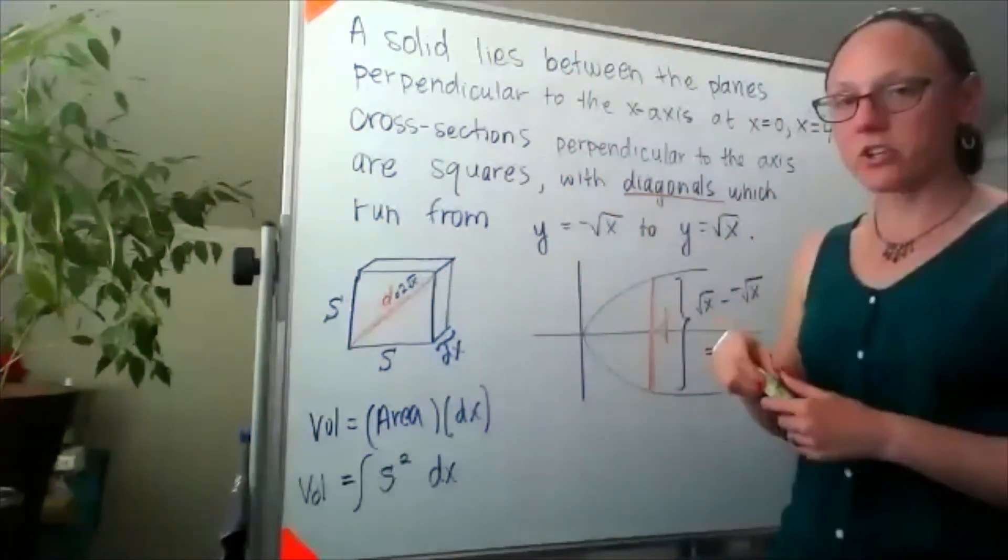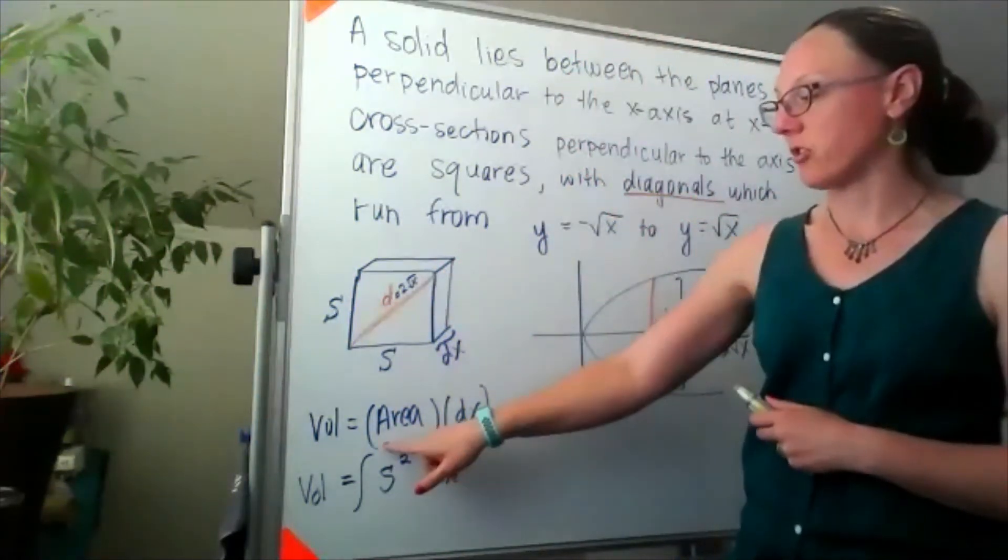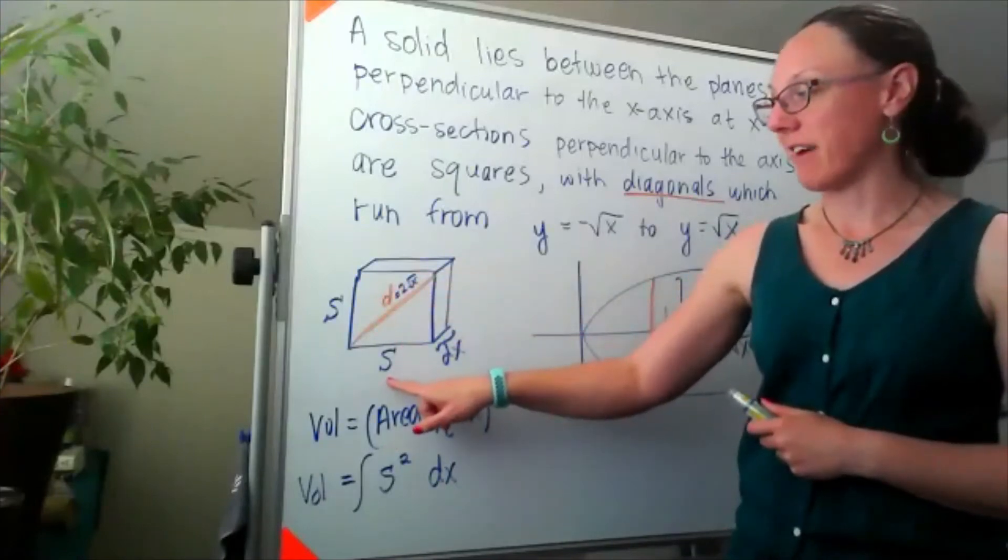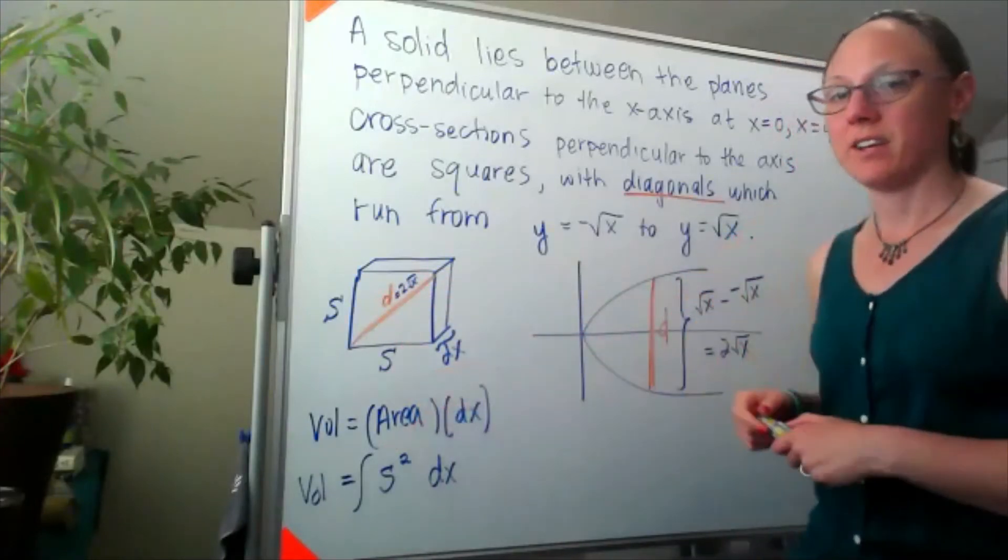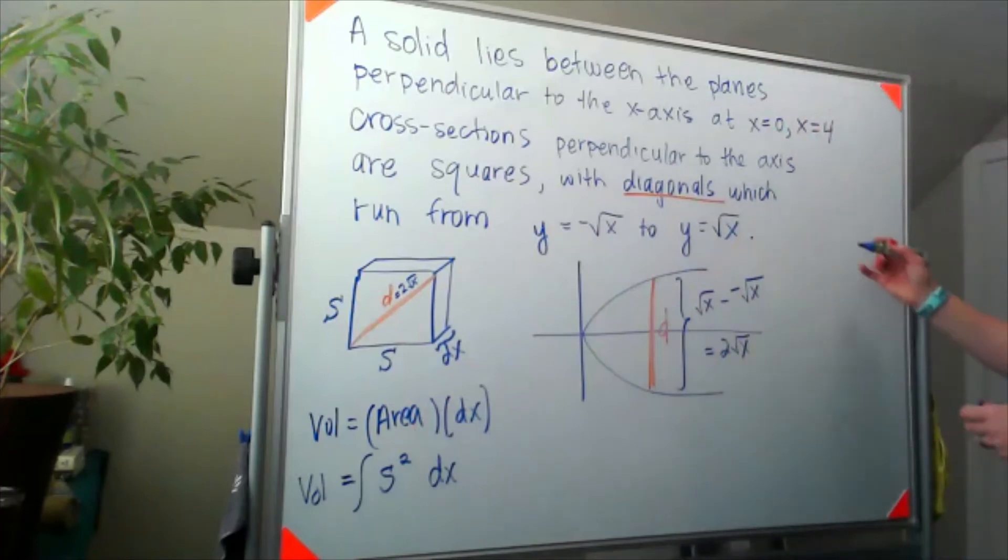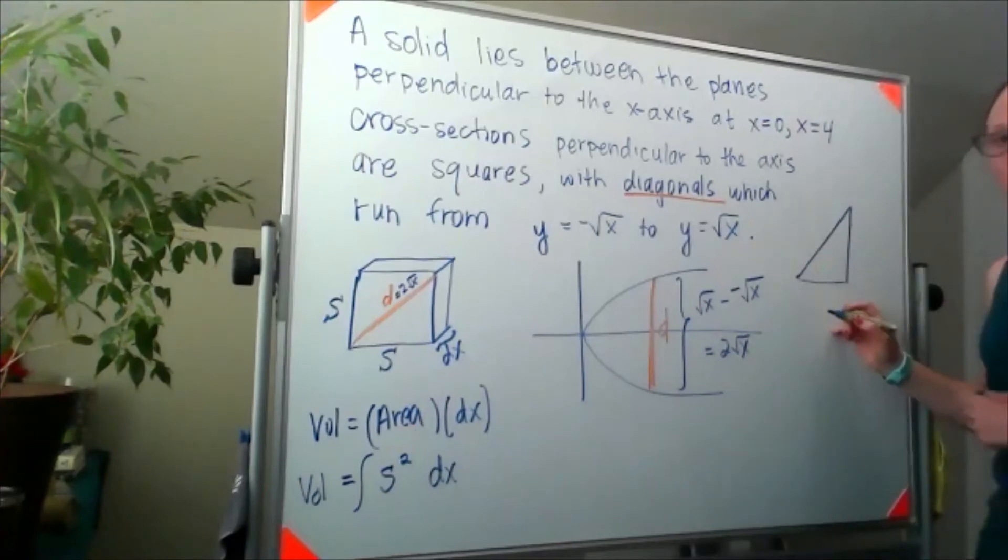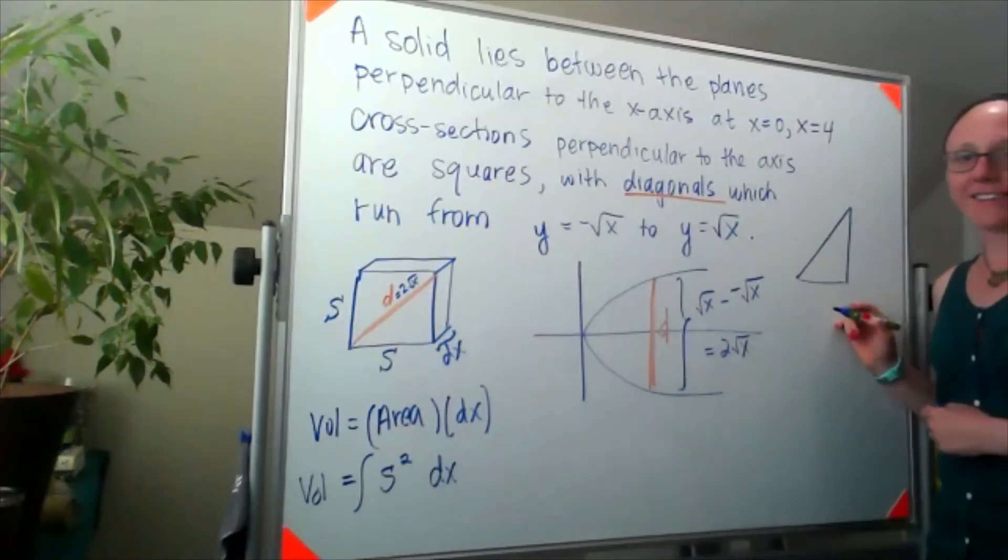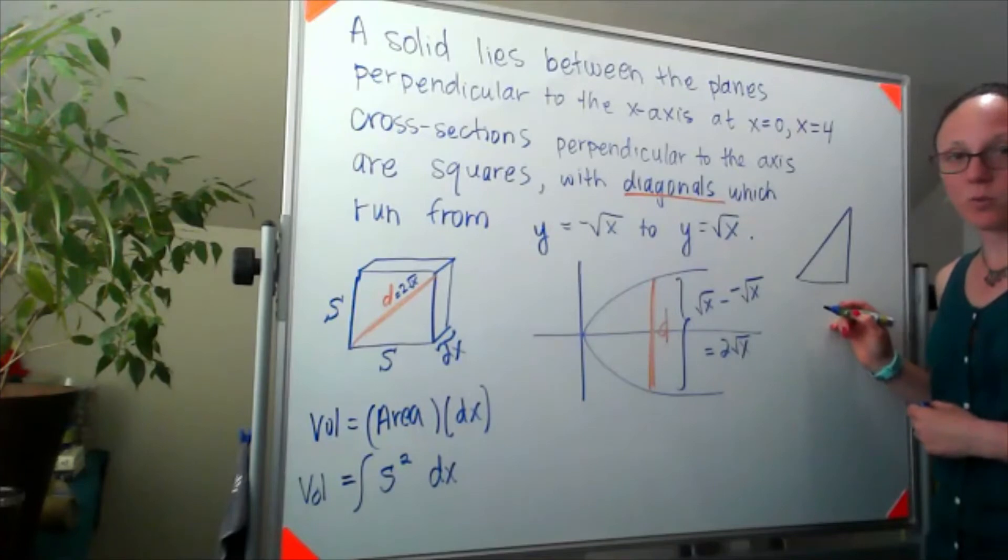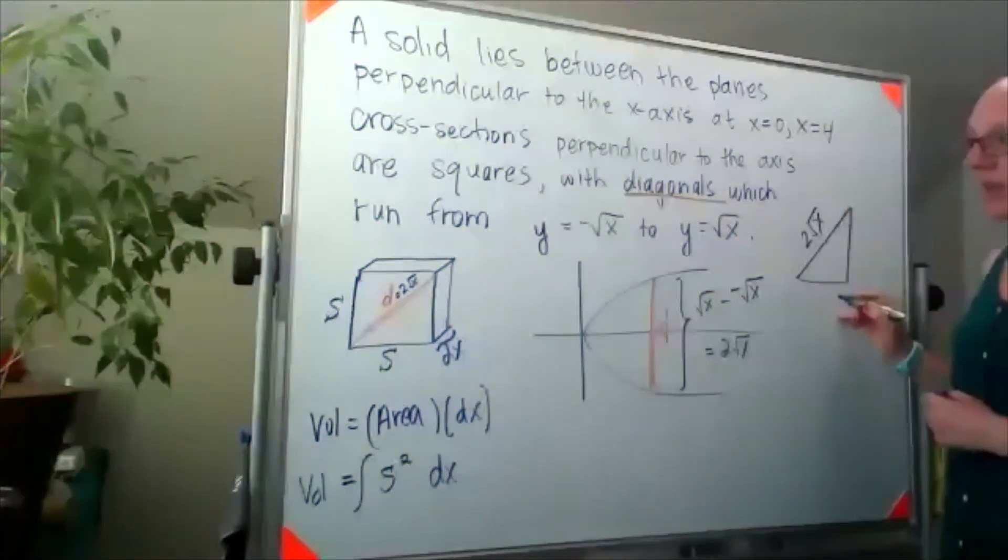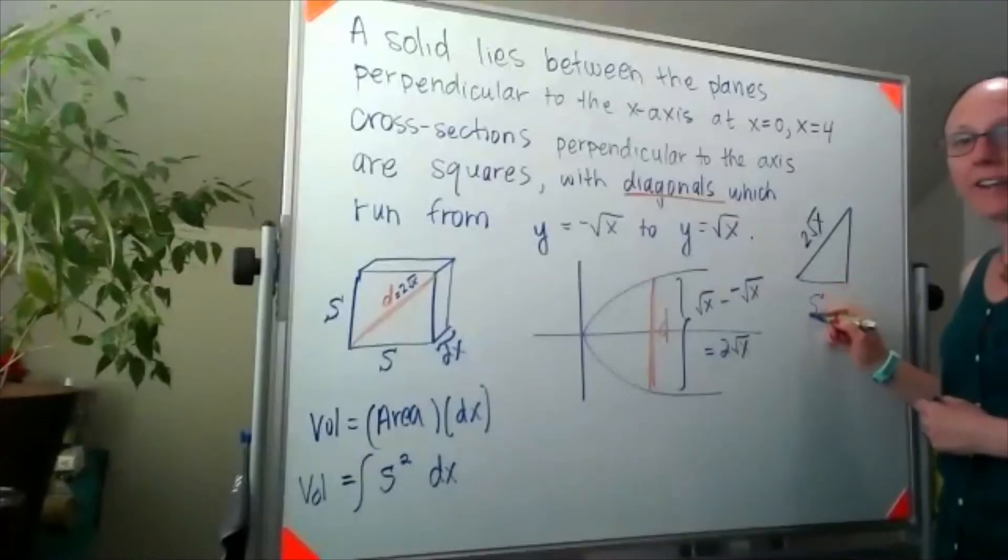In order to find this cross-sectional area, I don't need the value of d, I actually need the value of s squared. I've got a right triangle where we know that diagonal side is 2 square root of x. And because it's a square, each of these sides are s.